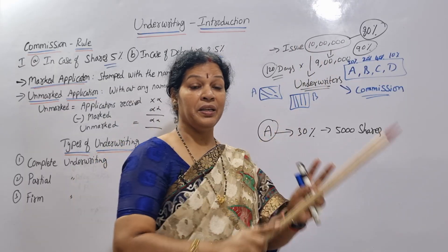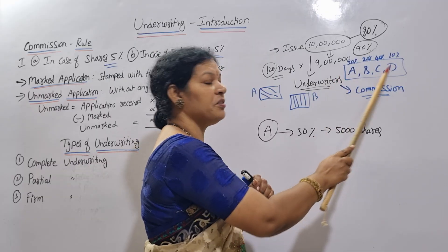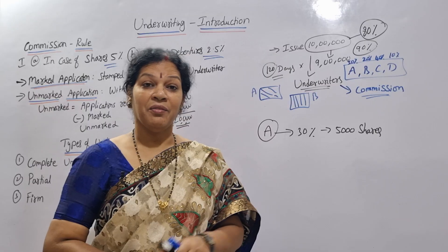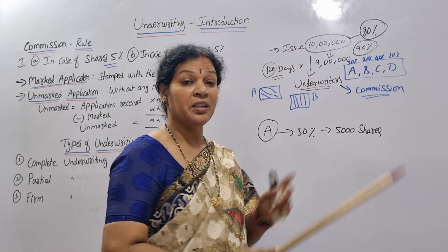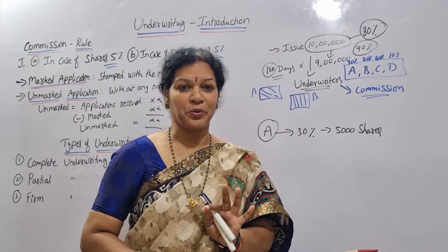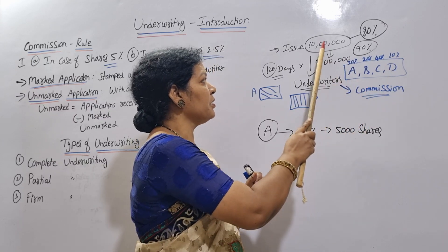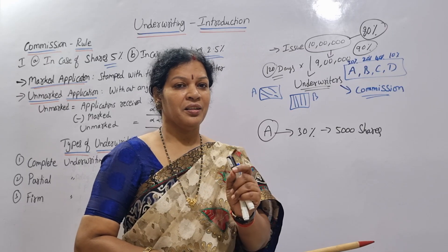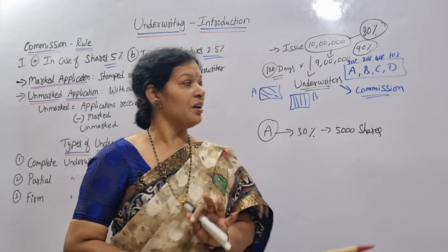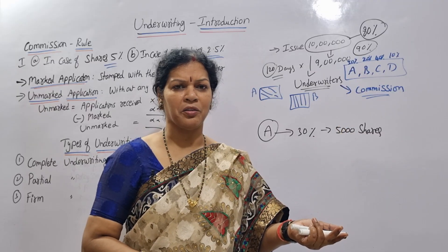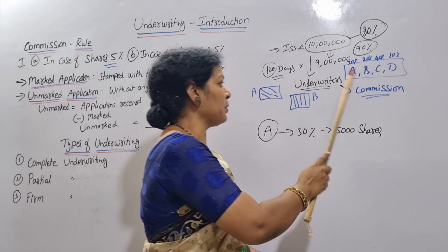Now, suppose underwriters are A, B, C, D. You can give a percentage commitment to each: A is 30%, which means 3,000,000; B is 20%, which means 2,000,000. They are each responsible up to their percentage. You can get subscribers through this arrangement.